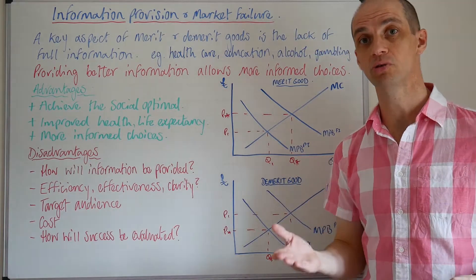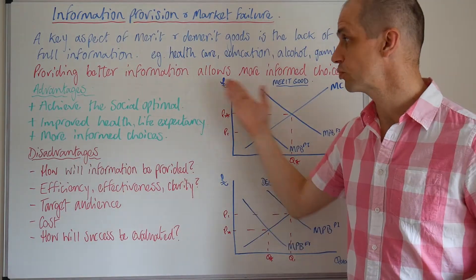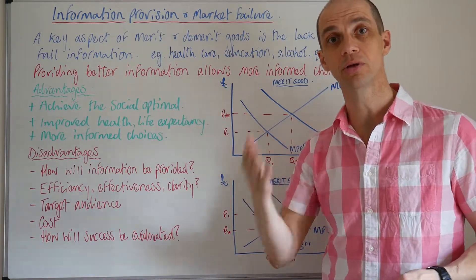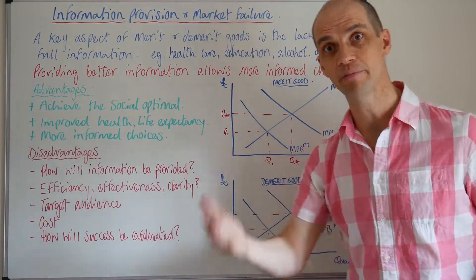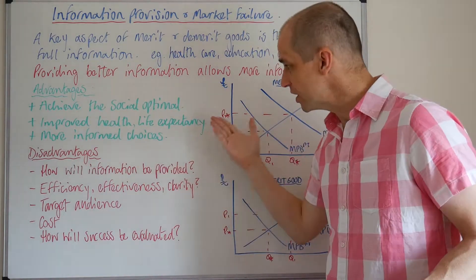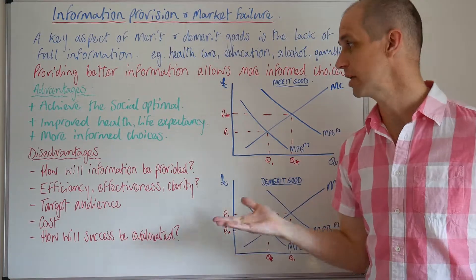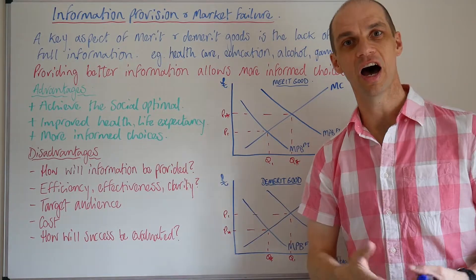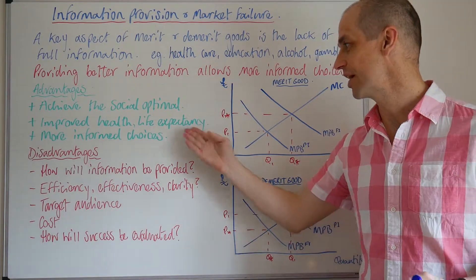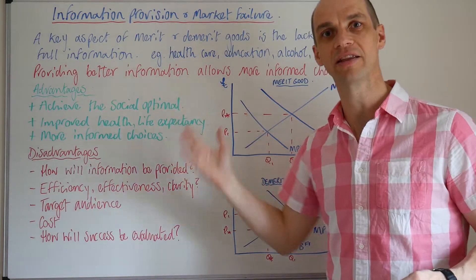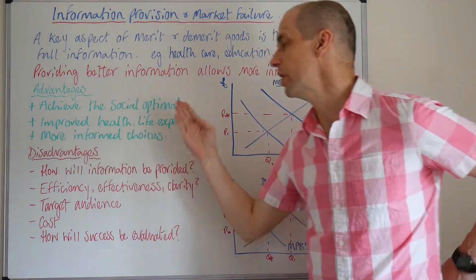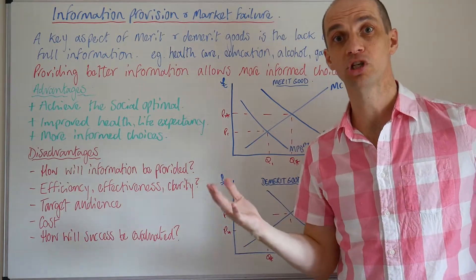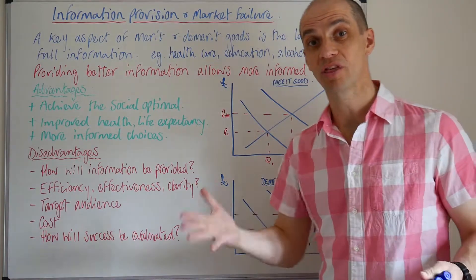There are a number of advantages to such a system. It's really about trying to achieve the social optimal level — that is restricting the quantity consumed of demerit goods and making sure that you do consume enough merit goods. This may translate to improved health and life expectancy, although that can be a bad thing for governments because it may mean more expenditure necessary to support that demographic. People will also be able to make free and more informed choices, and that's got to be a good thing.